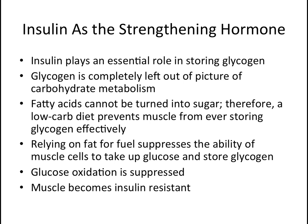A more complete scientific picture reveals insulin to be a strengthening hormone — a hormone that makes athletic endurance possible. Insulin plays an essential role in storing glycogen, and the inability to effectively store glycogen is a hallmark of type 2 diabetes. No athlete would dare adopt a diet deficient in insulinogenic foods, because that would translate into having no endurance. Glycogen is completely left out of the picture in the low-carb world. Because fatty acids cannot be turned into sugar, a low-carb, high-fat diet is very inefficient, forcing the liver to make glucose from amino acids and the glycerol backbone of triglycerides — which is energetically costly. On a low-carb diet, it is impossible to effectively store glycogen. A low-carb diet celebrates nothing but inefficiency.